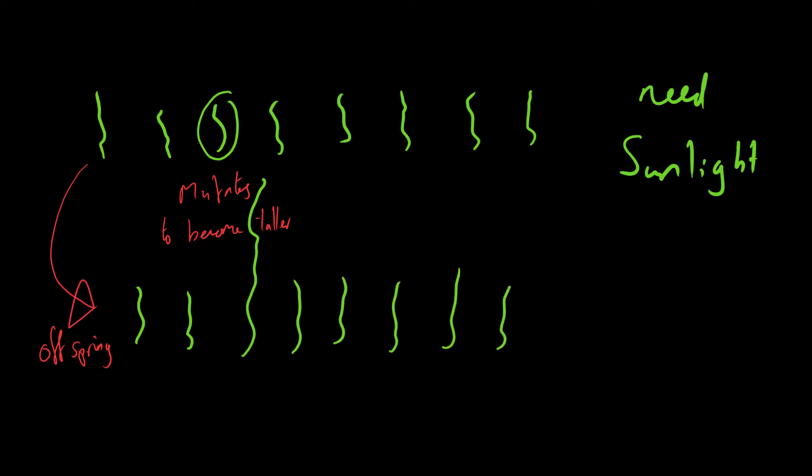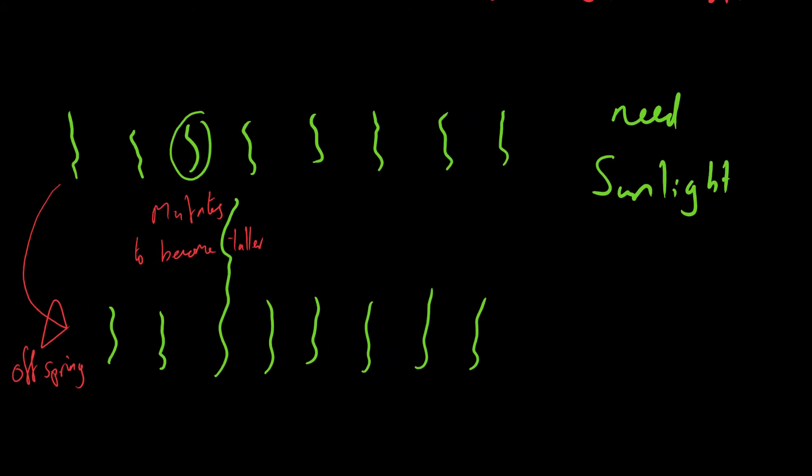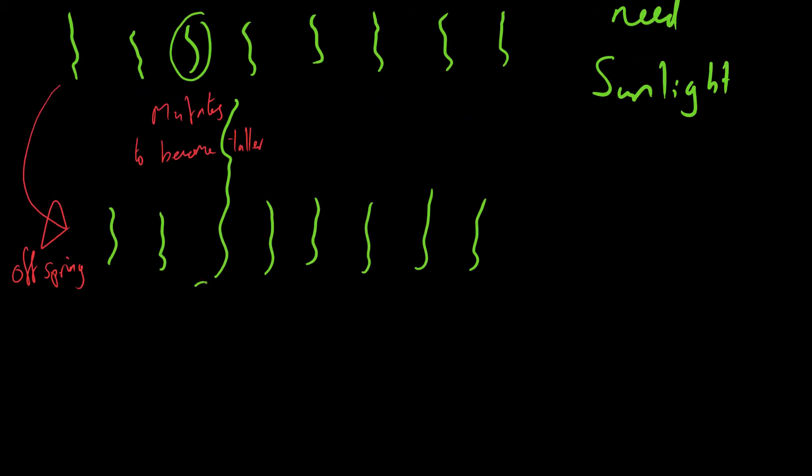That's because it has that new gene. It has an improved or a new characteristic. Now, in the case of sunlight, this plant is going to have first dibs on all the sunlight. And so the plants around this plant are going to die. Because they don't obtain sunlight, which means they can't photosynthesize. And photosynthesis provides plants with food.